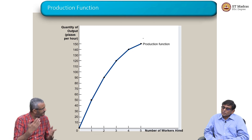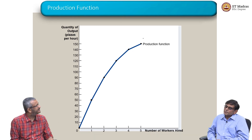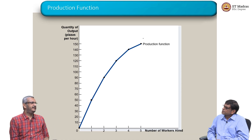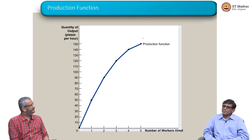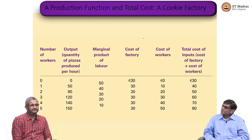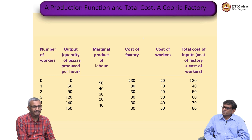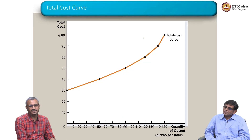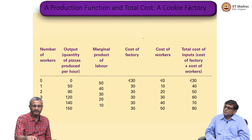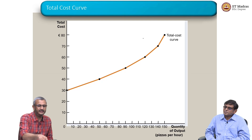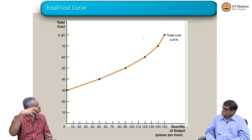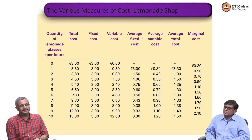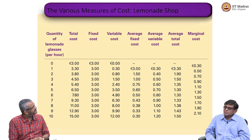A production function is the relationship between inputs and outputs — in this case, output is pizzas and input is only workers. Coming to this whole example in terms of the total cost curve: initially the cost was 30, 40, 50, 60 — it keeps going up. The total cost curve is always an increasing curve. Even though your fixed cost is the same, your variable cost is increasing, so that will pull the total cost up. It is always an increasing curve.